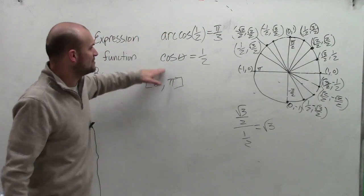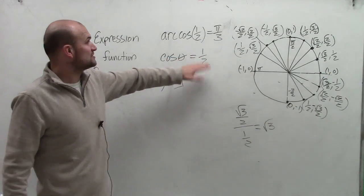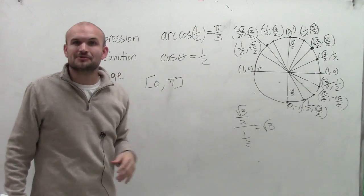Therefore, the cosine of pi over 3 is equal to 1 half. So therefore, the inverse cosine of 1 half is equal to pi over 3.